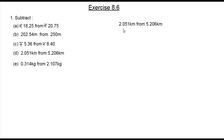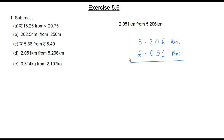The fourth question is: 2.051 kilometers from 5.206 kilometers. Both numbers have one digit before the decimal point and three digits after, so no need to add zeros. Writing the bigger number first: 5.206 km, then 2.051 km. Subtracting: 6 minus 1 is 5. We cannot subtract 5 from 0, so we borrow from 2 — it becomes 1 and the 0 becomes 10. So 10 minus 5 is 5, 1 minus 0 is 1. Copy the decimal point, then 5 minus 2 is 3. Our answer is 3.155 kilometers.